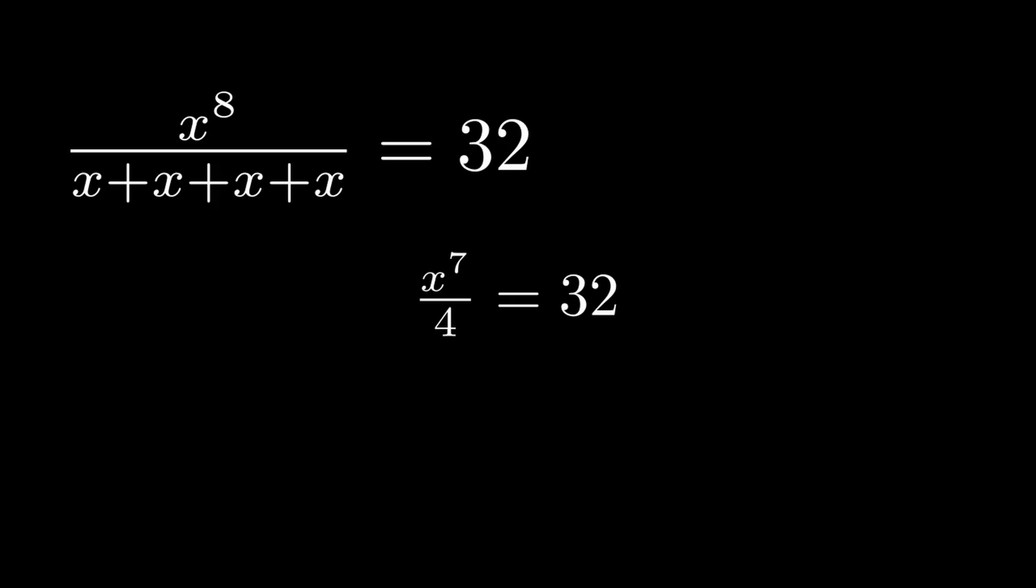Now, the aim of this problem is to solve for x, right? So, we can get rid of the 4 in the denominator of the left hand side by multiplying both sides of this equation by 4.